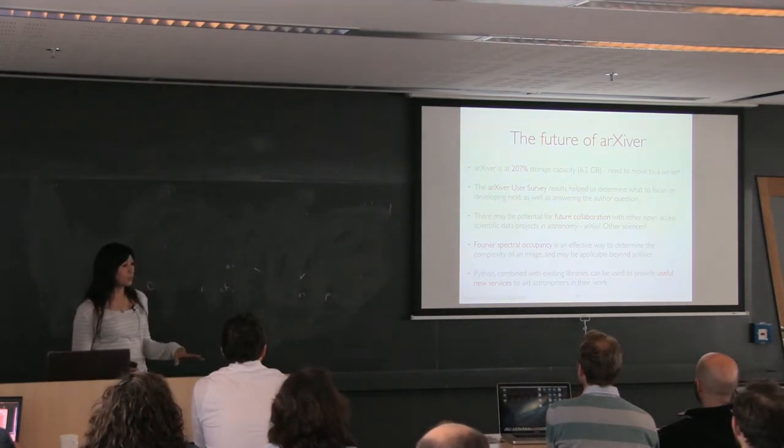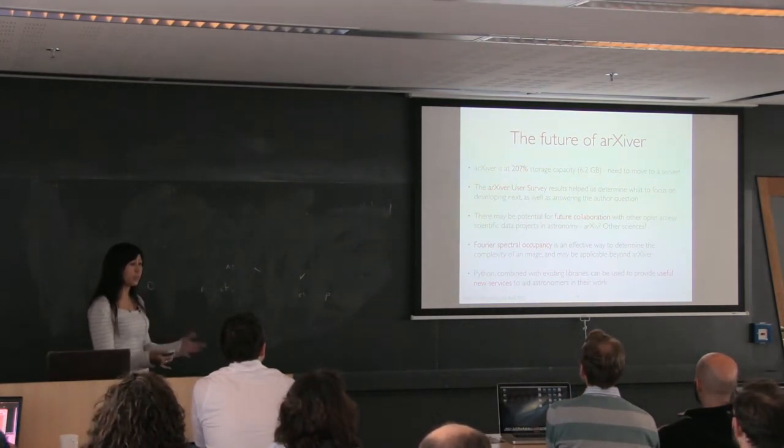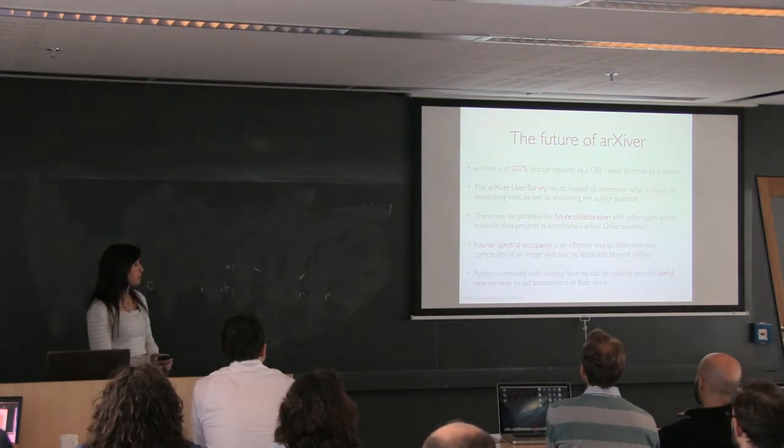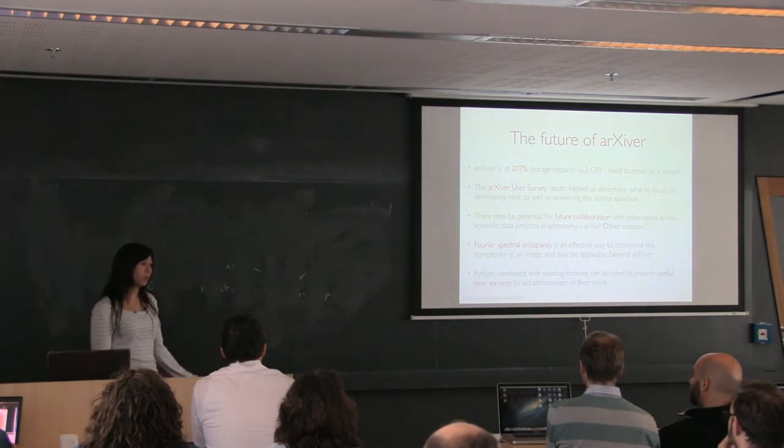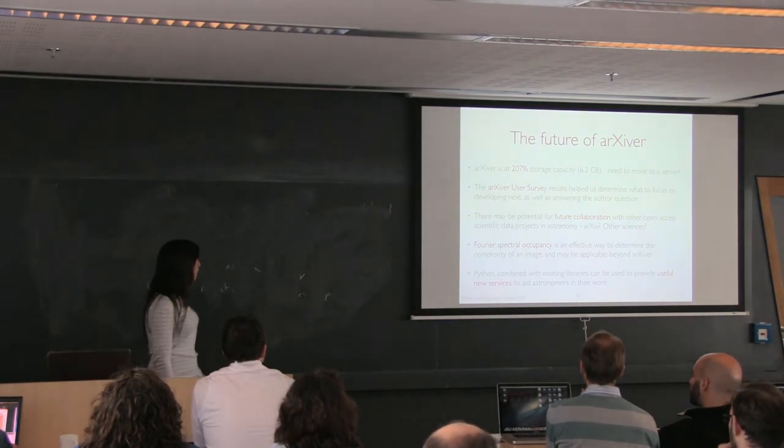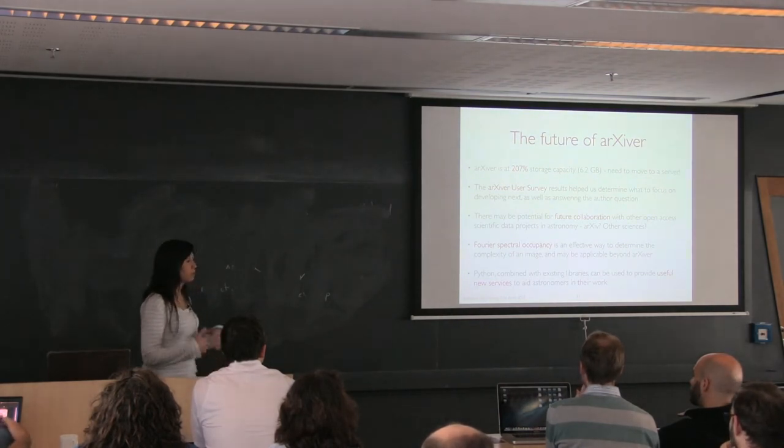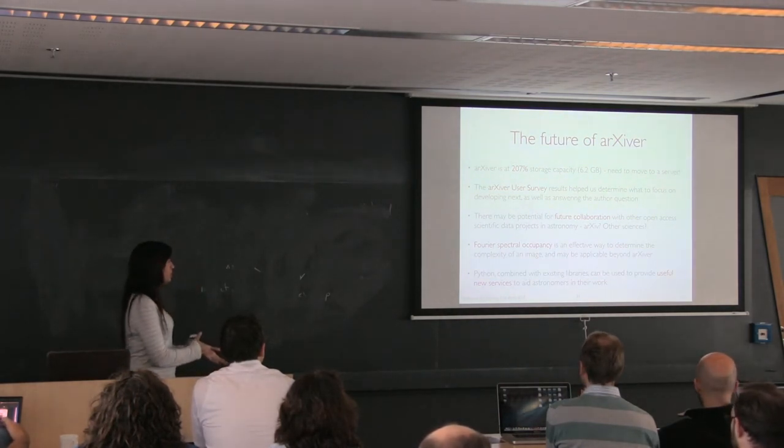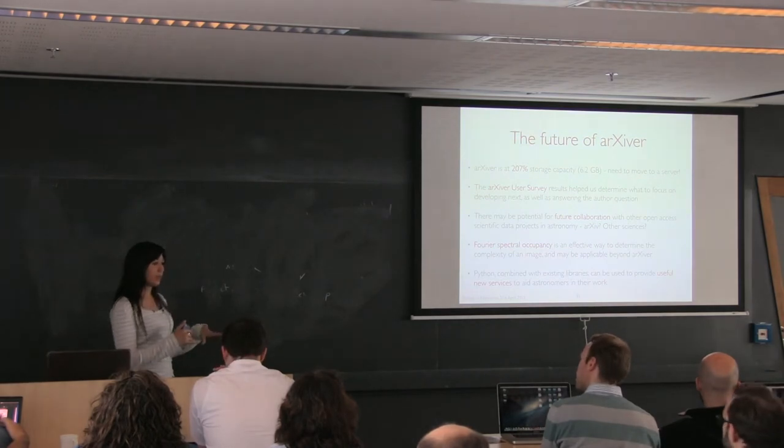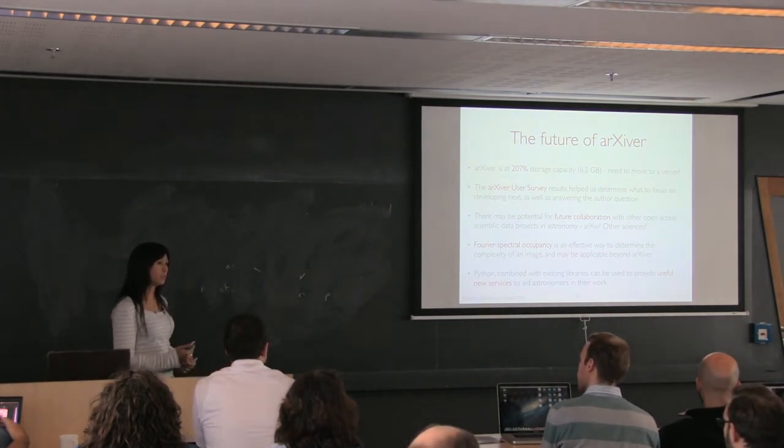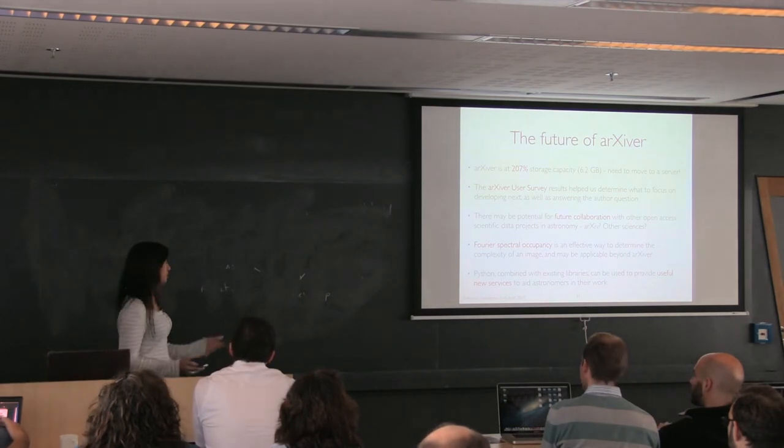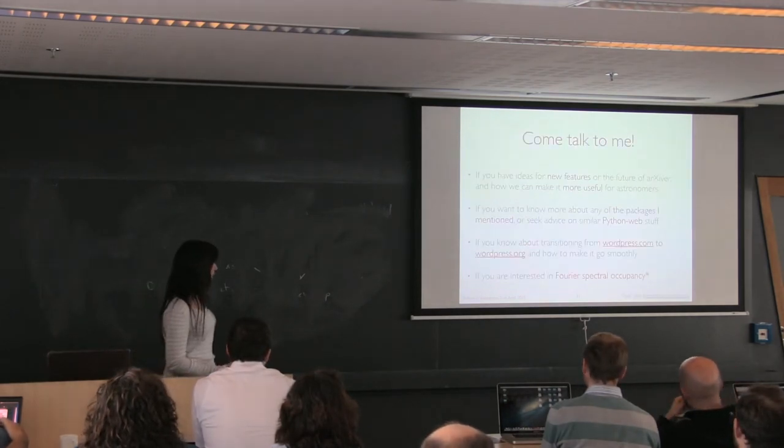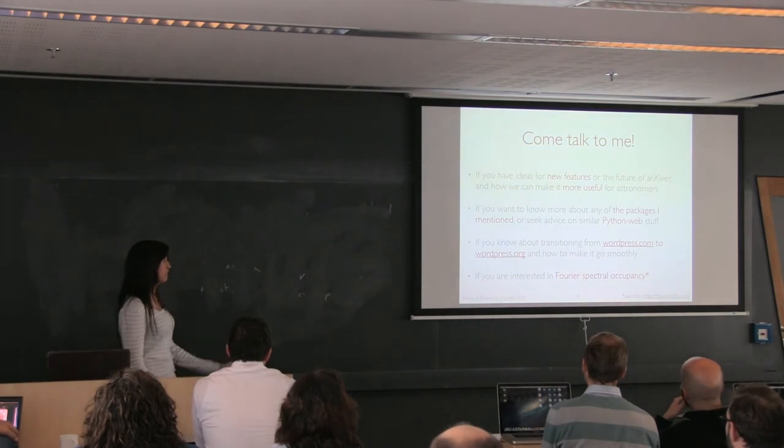For spectral occupancy, measuring the Fourier distribution within an image is a pretty useful technique for determining what kind of image you're dealing with, and that might be useful to other people beyond Arxiver. If you're interested in that, let me know. Python can, as well as providing packages for people to do science, you can also use Python as the back end to provide tools and resources for astronomers. It'd be cool to see more of those kinds of things happening, and it is possible to do because I have no web. D3.js is a nightmare.